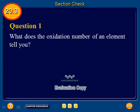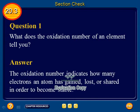That concludes the lecture for section 3. Question 1 from section 3: What does the oxidation number of an element tell you? The answer: The oxidation number indicates how many electrons an atom has gained, lost, or shared in order to become stable.